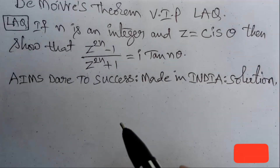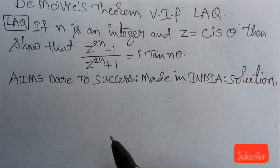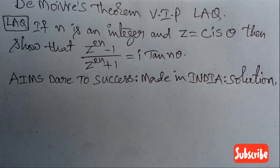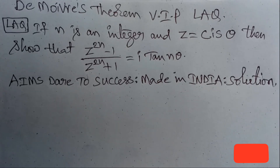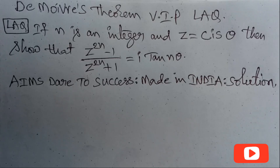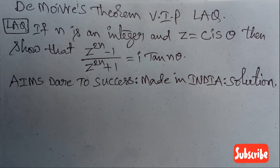Today I wanted to discuss with you De Moivre's Theorem — a very important previous VIP long answer question. If n is an integer and z is equal to cis theta, then show that z power 2n minus 1 by z power 2n plus 1 is equal to i tan n theta.